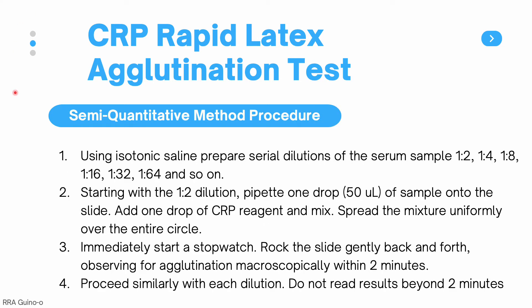The semi-quantitative method allows you to estimate CRP levels in the patient sample. Prepare serial dilutions of the serum using isotonic saline: 1:2, 1:4, 1:8, 1:16, 1:32, 1:64, and so on. Starting with the 1:2 dilution, pipette one drop (50 microliters) onto the slide, add one drop of CRP reagent, mix, spread uniformly over the entire circle, and start the stopwatch. Rock the slide and observe for agglutination within 2 minutes. Proceed with each dilution similarly — do not read results beyond 2 minutes — continuing until you reach a negative result.